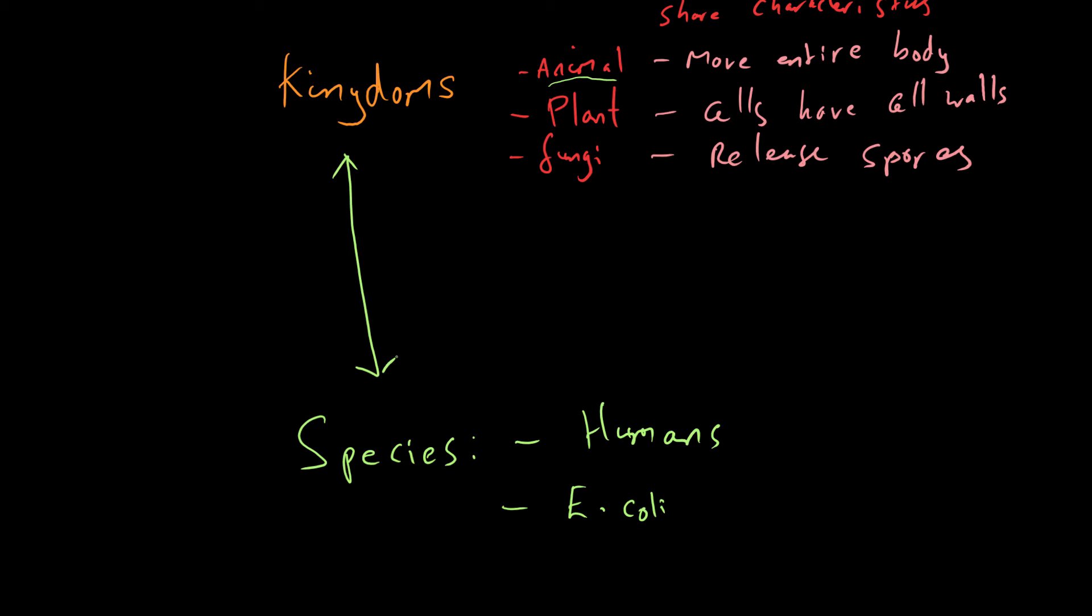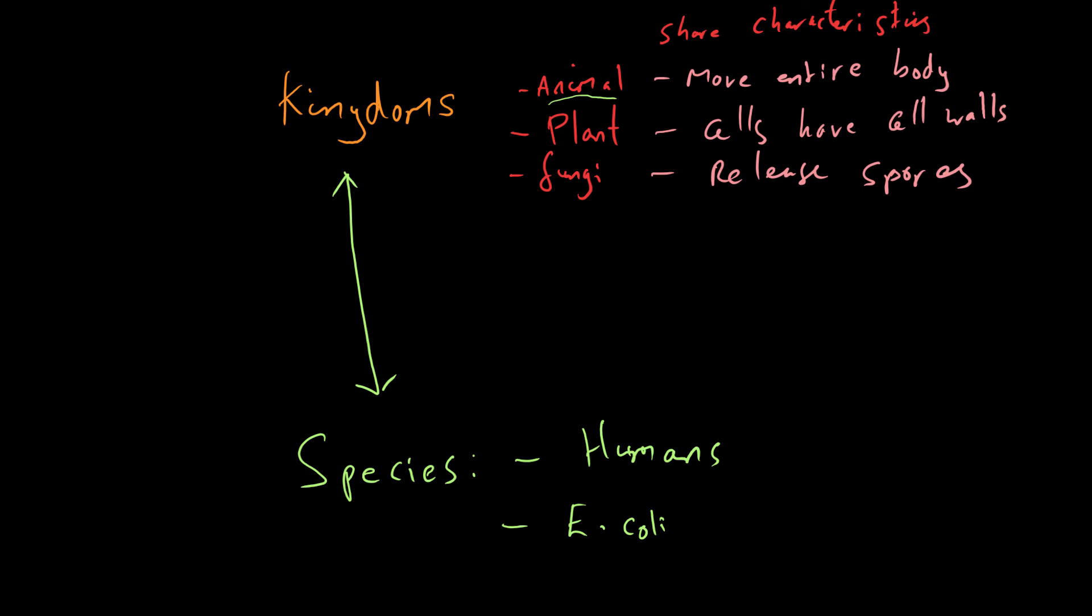So we're just looking at different levels of hierarchy there. Now there are other levels of hierarchy in between kingdom and species. Those are the phylum, the class, order, family and genus. But you don't need to remember those luckily. So all you need to know is kingdoms and species. So I hope that makes sense.